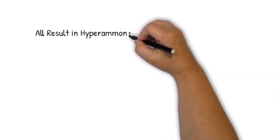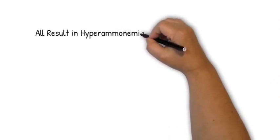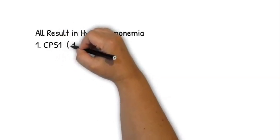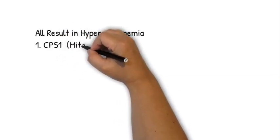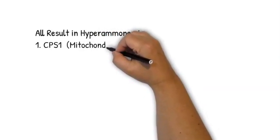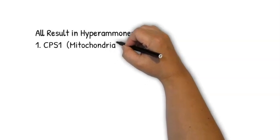...hyperammonemia, which can be pretty toxic to neurons in the brain because it uses up the alpha-ketoglutarate and the TCA cycle can't work. The absence of the first enzyme, CPS1, which is a mitochondrial enzyme...